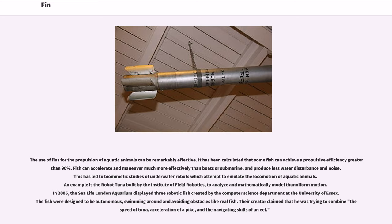The use of fins for the propulsion of aquatic animals can be remarkably effective. It has been calculated that some fish can achieve a propulsive efficiency greater than 90%. Fish can accelerate and maneuver much more effectively than boats or submarines, and produce less water disturbance and noise. This has led to biomimetic studies of underwater robots which attempt to emulate the locomotion of aquatic animals. An example is the robot tuna built by the Institute of Field Robotics to analyze and mathematically model thunniform motion. In 2005, the SeaLife London Aquarium displayed three robotic fish created by the Computer Science Department at the University of Essex, designed to be autonomous, swimming around and avoiding obstacles like real fish.